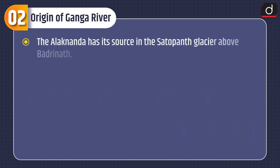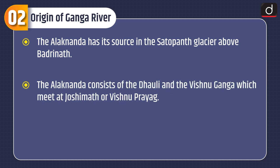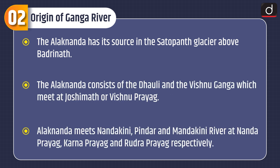The Alaknanda has its source in the Satopanth glacier above Badrinath. The Alaknanda consists of the Dhali and the Vishnu Ganga, which meet at Joshimath or Vishnu Prayag. Alaknanda meets the Nandakini, Pindar, and Mandakini rivers at Nand Prayag, Karn Prayag, and Rudra Prayag respectively.